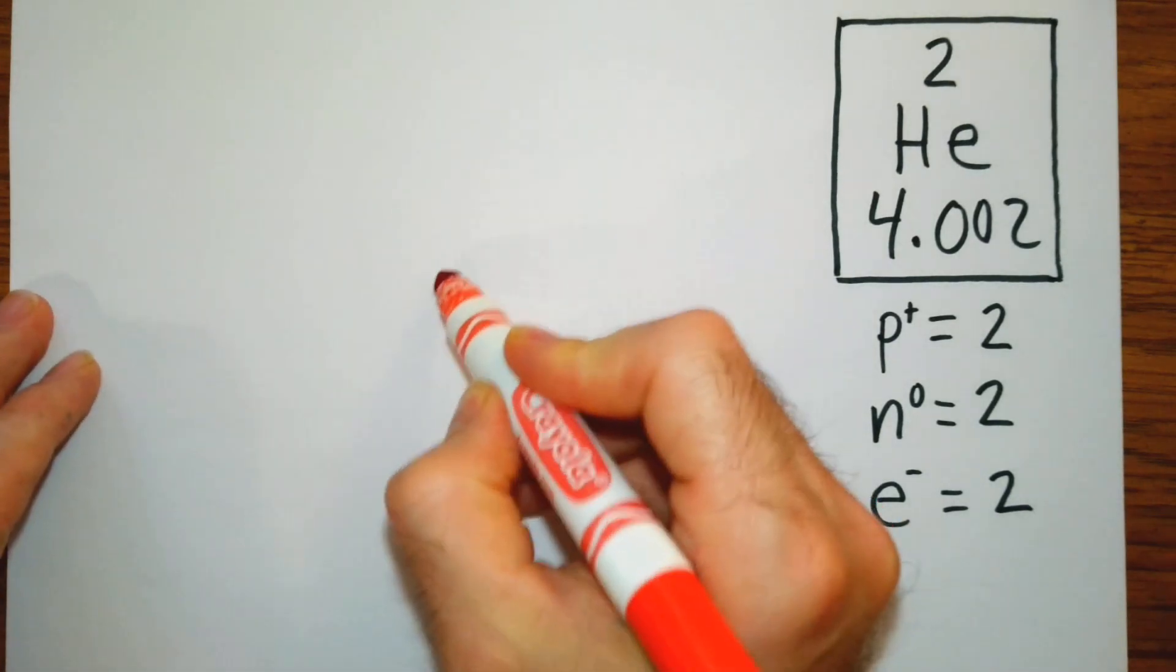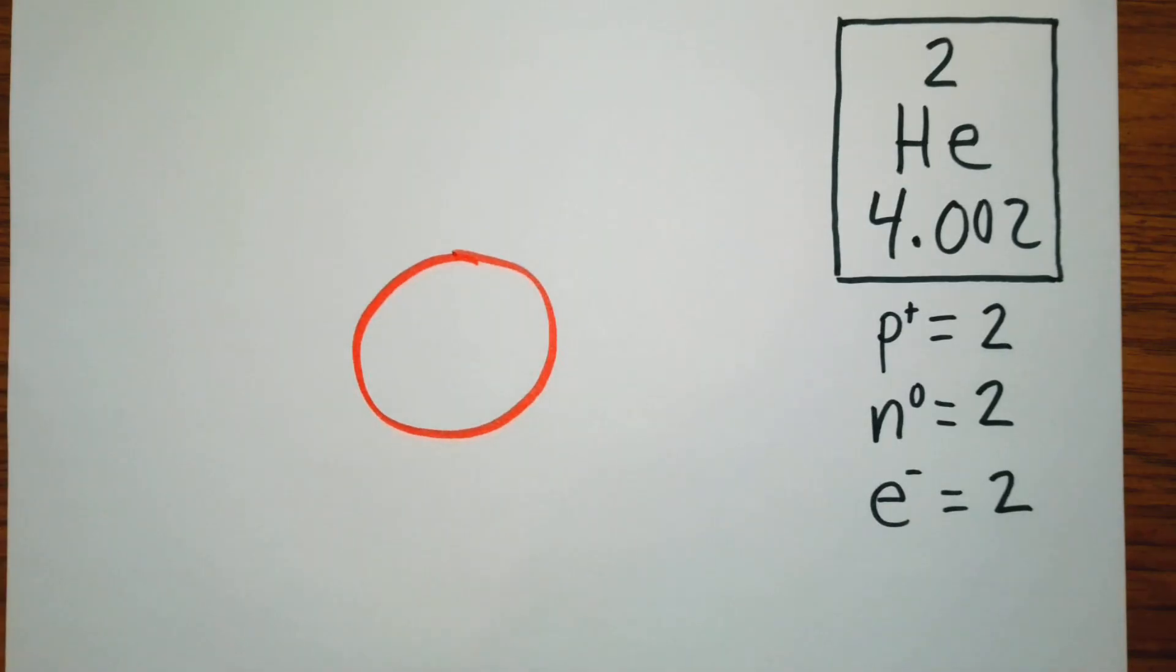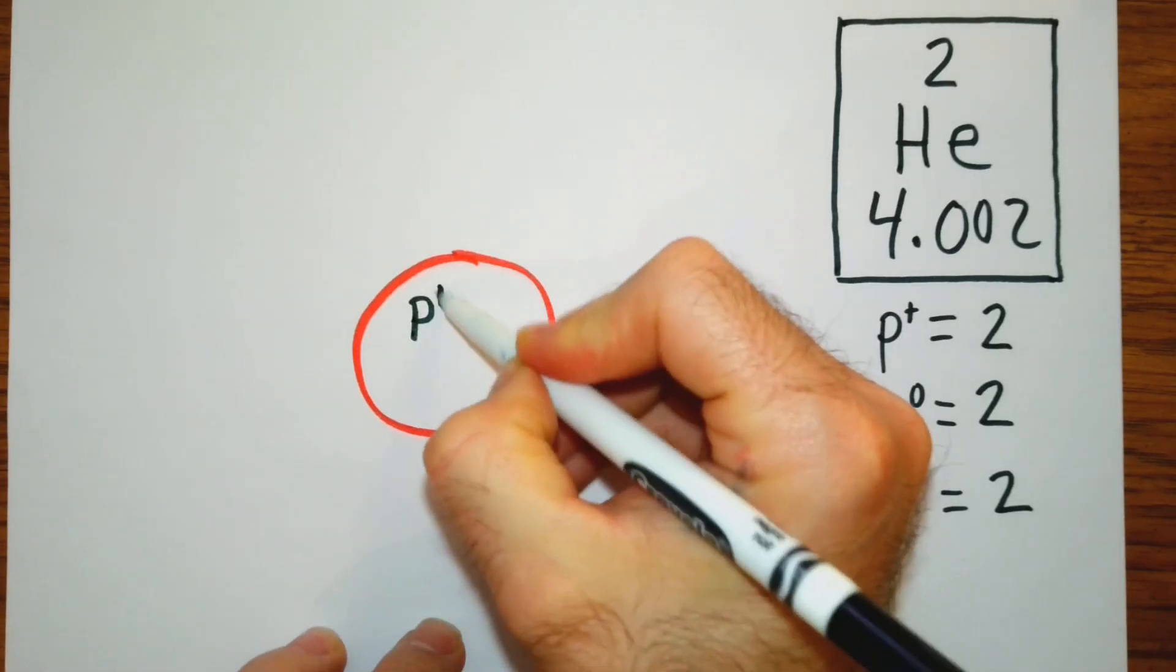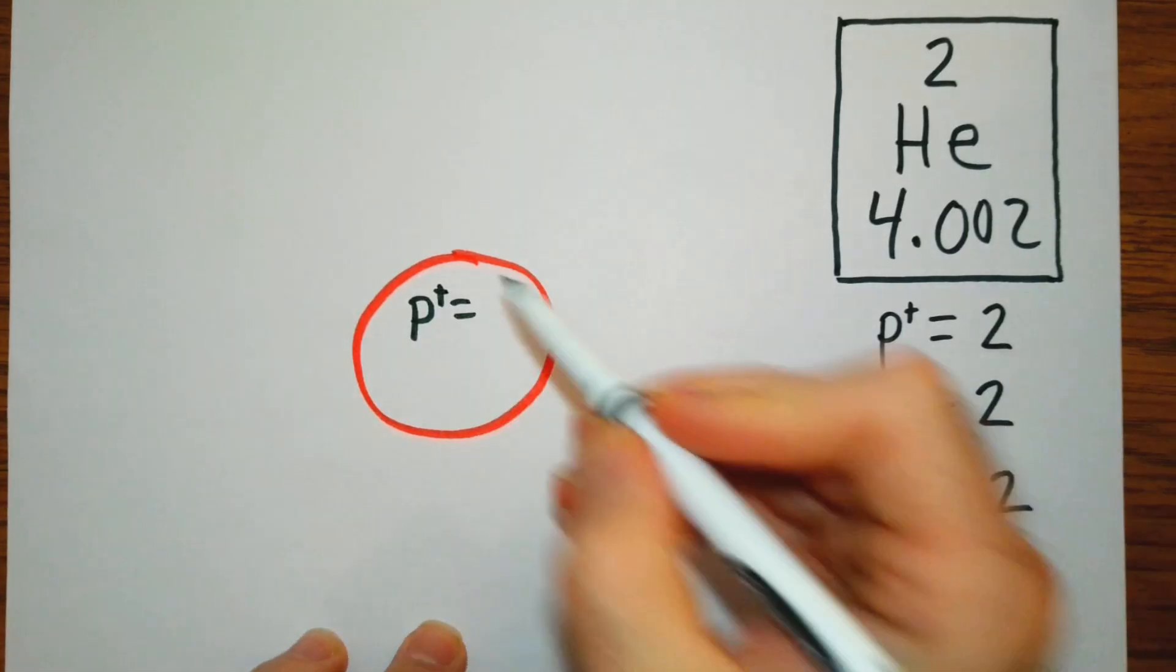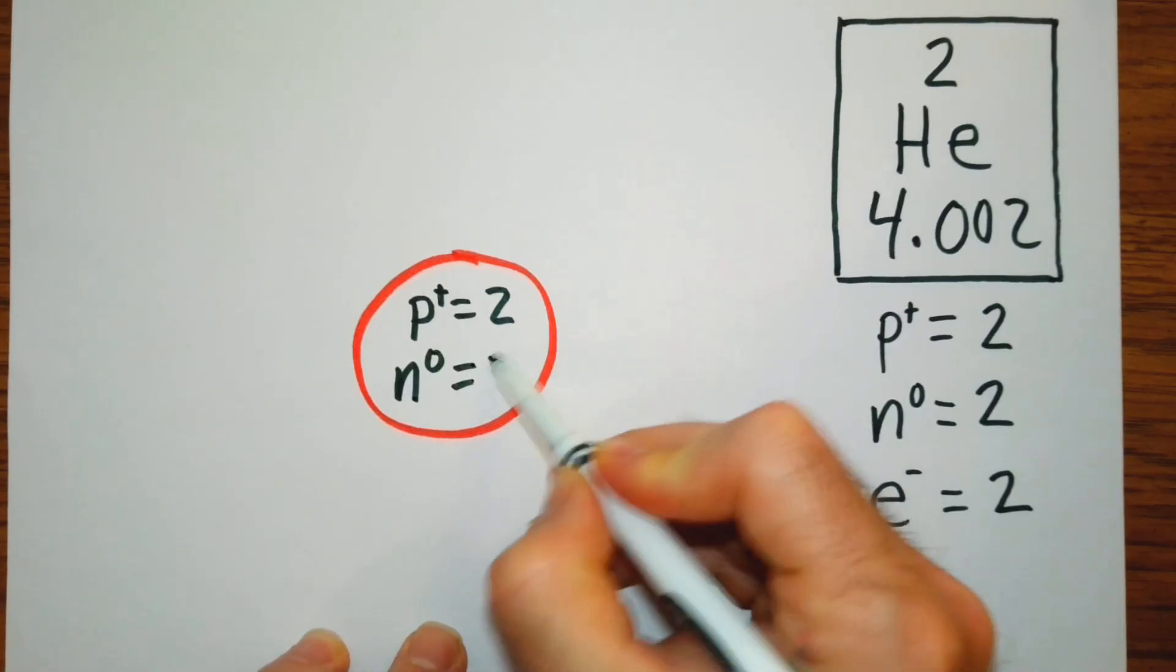So I'm going to draw a nucleus here. And in our nucleus, we'll have two protons, and we'll have two neutrons.